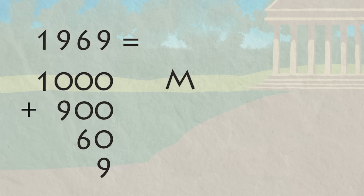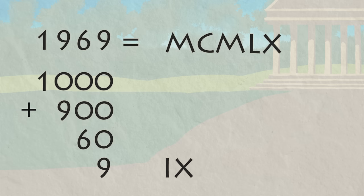One thousand is M. Nine hundred is one hundred less than one thousand, so we write that part as CM. Sixty is fifty plus ten, so we write that as LX. And nine is one less than ten, which is IX. Let's put all that together. M, CM, LX, IX.